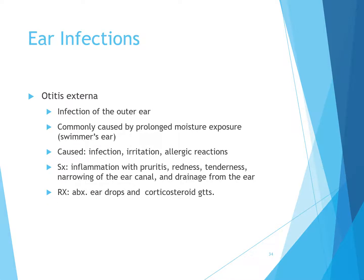Otitis externa is an infection of the outer ear commonly caused by prolonged moisture or exposure — we call it swimmer's ear. It is caused by infection, irritant, or allergic reactions, usually Pseudomonas, Staphylococcus aureus, or rarely E. coli. Symptoms include inflammation, pruritus, redness, tenderness, narrowing of the ear canal, and drainage from the ear. Treatment involves antibiotic ear drops and sometimes corticosteroid drops.